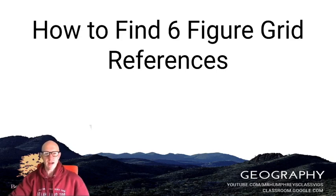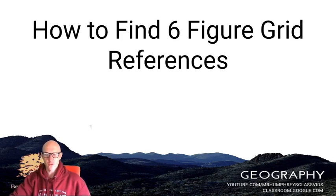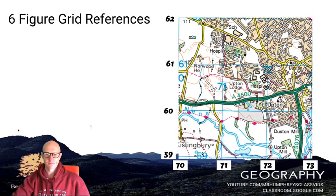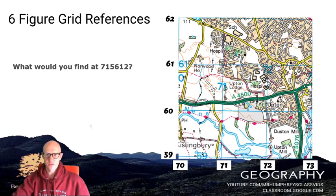I'm going to show you how to find six-figure grid references from an Ordnance Survey map. Using this example, the question is: what would you find at grid reference 715612? The key thing to do is break that number down. Start off by looking at the first two numbers, which are 71.